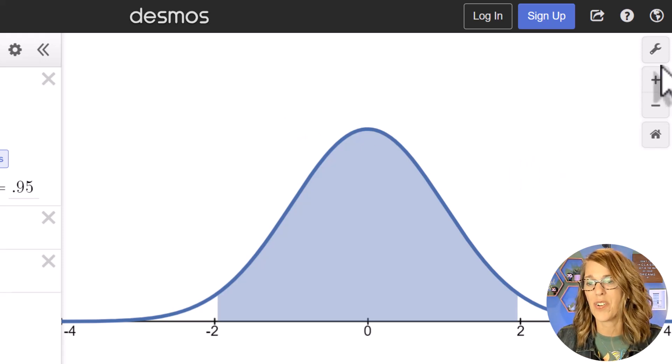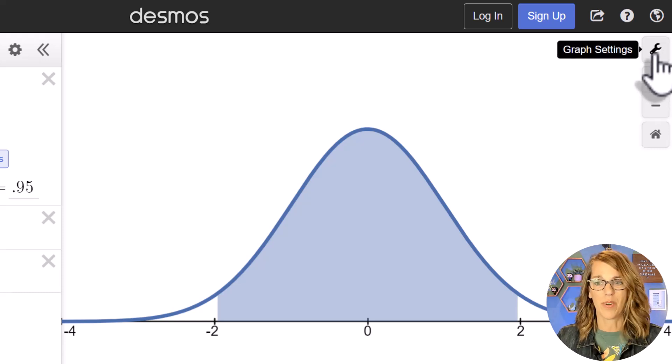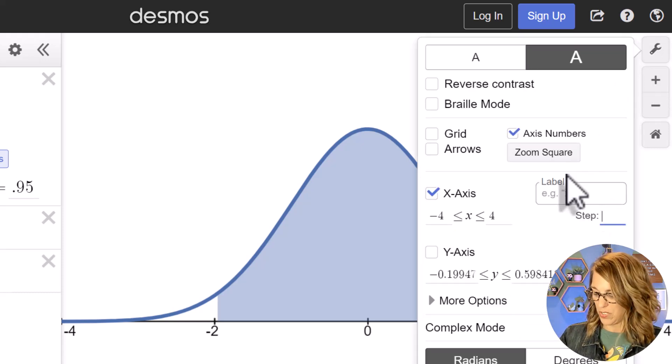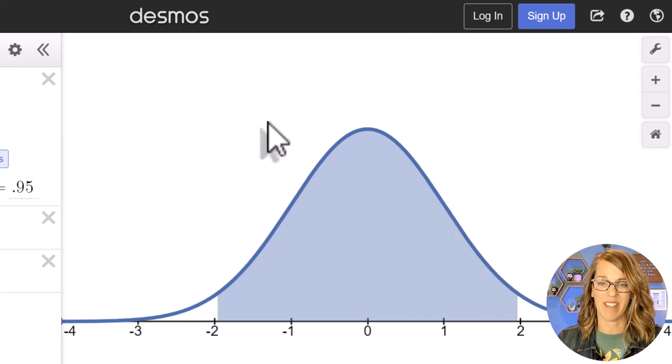I also have the increments on the x-axis right now going from 0 to 2 to 4 in increments of 2. So let's change that to increments of 1 so it's easier to read. Back to our wrench. I'm going to change that step to a 1. Okay, so looking better.